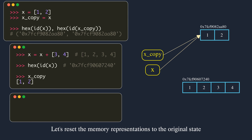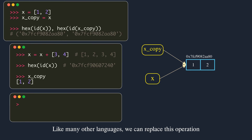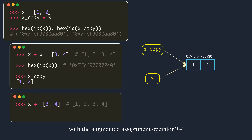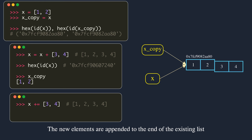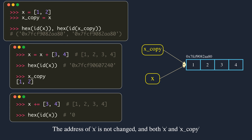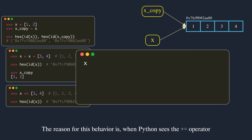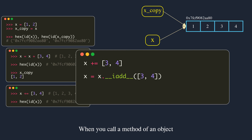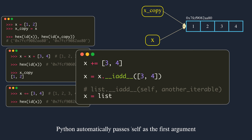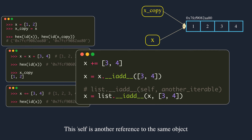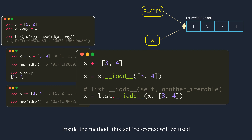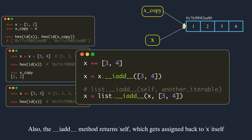Now using the augmented assignment operator plus-equals, the value of x becomes the same as before but how it gets there is different. This time, new elements are appended to the end of the existing list — the address of x is not changed, and both x and x_copy will see the new value. The reason for this behavior is that when Python sees the plus-equals operator, it calls the __iadd__ method of the object. When you call a method of an object, Python automatically passes self as the first argument — self is another reference to the same object. The __iadd__ method returns self, which gets assigned back to x, so x stays as a reference to the original object.